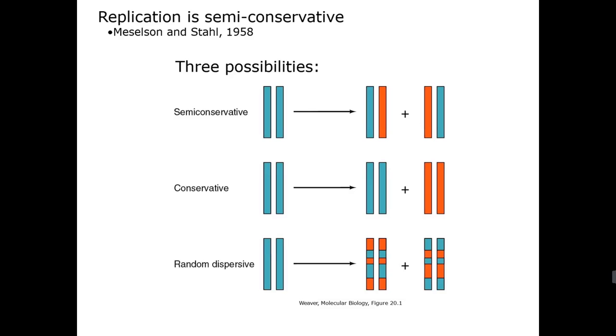Now the second model was a conservative model approach where the parental strands would still serve as templates for synthesis but at the end of the reaction the two parental strands come back and associate with each other and the two newly synthesized strands also associate with each other.